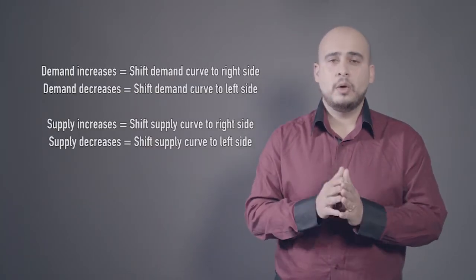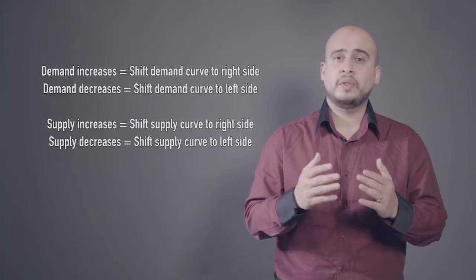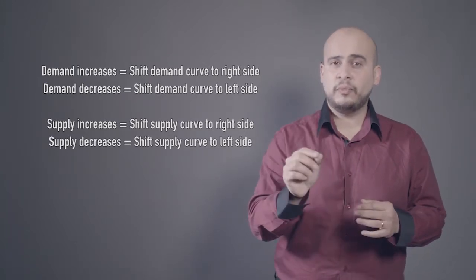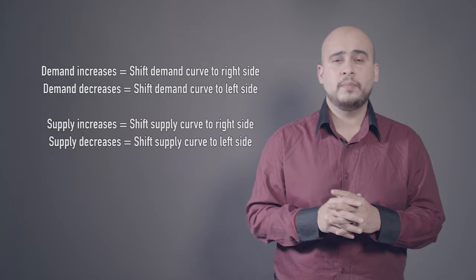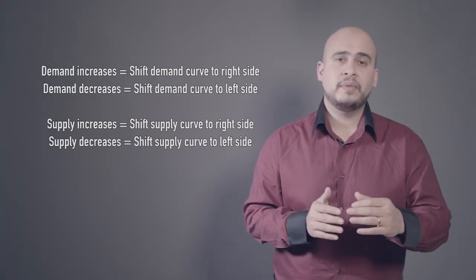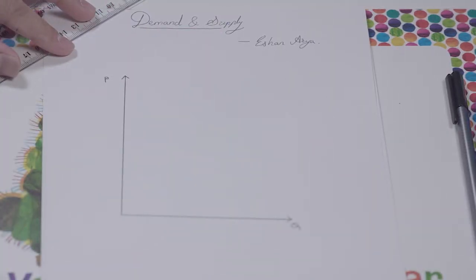Also bear in mind: when demand increases, it is shown by a shift in the demand curve to the right, and when demand decreases, the demand curve shifts to the left. For supply, if supply increases the supply curve shifts to the right, and if supply decreases it shifts to the left. Now let's look at the diagrams and a few scenarios for shifts in demand and supply, and movements along the curve for changes in quantity demanded and quantity supplied.